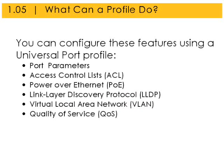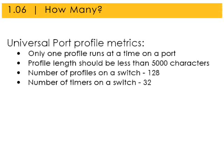You can configure these features using a Universal Port profile: port parameters, access control lists, Power over Ethernet settings, Link Layer Discovery Protocol, virtual local area networks, and quality of service. Some Universal Port profile metrics to keep in mind: only one profile runs on a port at a time; profile length should be less than 5,000 characters; the number of profiles on a switch should be around 128 or less; and the number of timers on a switch should be 32 or less.